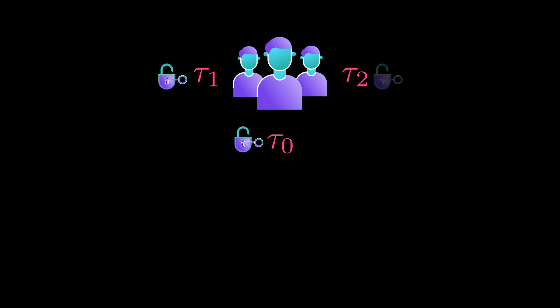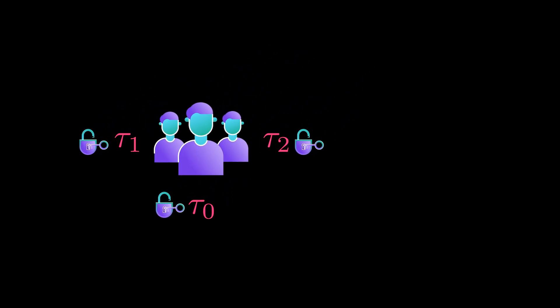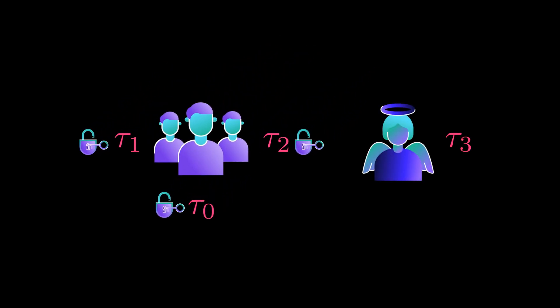Lastly, there is one more way to break the ceremony. What if all the people saved the tau they created, when they were supposed to keep it secret, even from themselves? This is why we call the tau's toxic waste, because with them ceremony members can recreate secret tau. So how is the ceremony secure? Well, it is sufficient only for one honest person to keep their tau secret. The ceremonies are open, so if you want to be absolutely sure the setup is secure, you can join the ceremony.